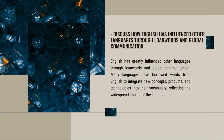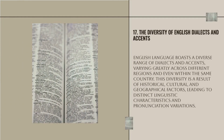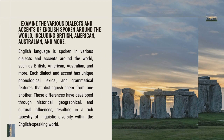English boasts a diverse range of dialects and accents, varying greatly across different regions and even within the same country. Dialects such as British, American, and Australian each have unique phonological, lexical, and grammatical features that distinguish them from one another. These differences have developed through historical, geographical, and cultural influences, resulting in a rich tapestry of linguistic diversity within the English-speaking world.